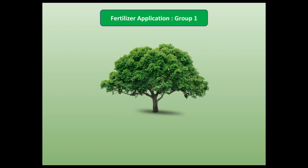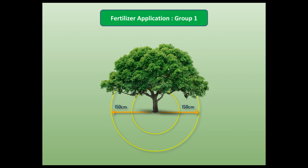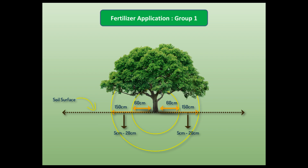In Group 1 — the big tree group including mango, lychee, and others — the active roots, or mouth, of a fruiting tree are placed around the tree in all directions starting at 60 centimeters away from the trunk, spreading up to 150 centimeters, and located 5 to 20 centimeters below the soil surface. So the tree's mouths are located along 60 to 150 centimeters in all directions.